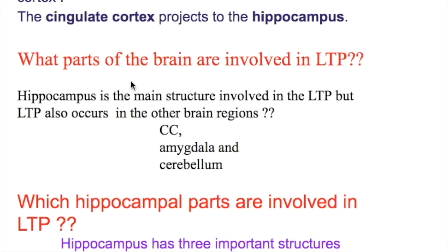What parts of the brain are involved in long-term potentiation? The hippocampus is the main structure involved in long-term potentiation, but LTP also occurs in other brain regions — the cerebral cortex, amygdala, and cerebellum.